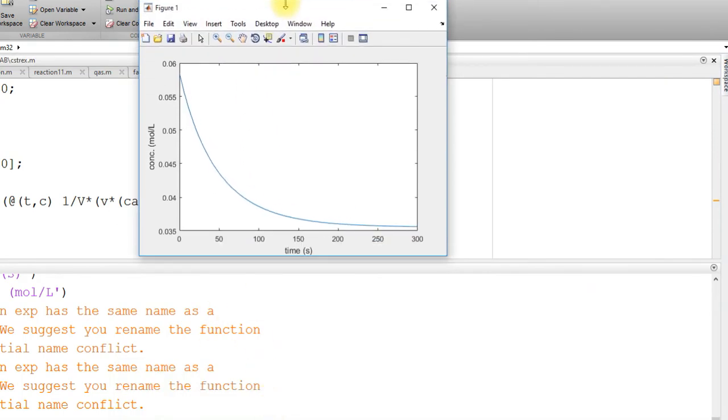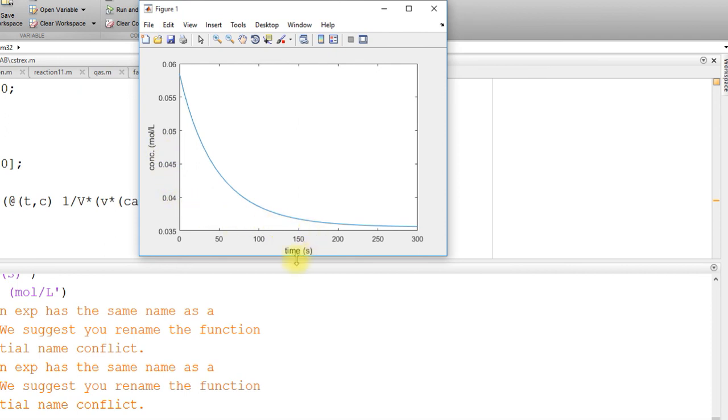This is basically concentration versus time. Started with the initial value, initial value means the value at previous steady state, previous flow rate. So from here to here, we change the flow rate, we decrease the flow rate basically.